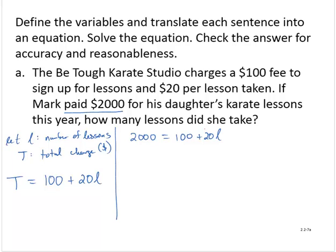So we identify the variable term, remove any other terms from that side of the equation, subtract 100 from both sides. So then 1900 is equal to 20L. Dividing through by 20 both sides of the equation, we find that L is 95.